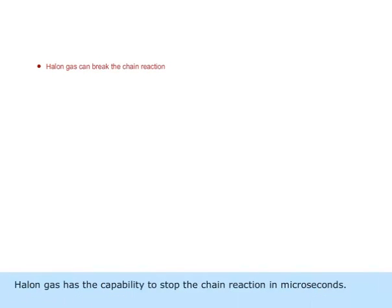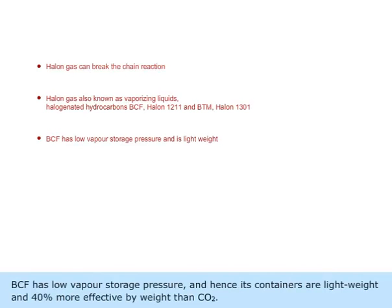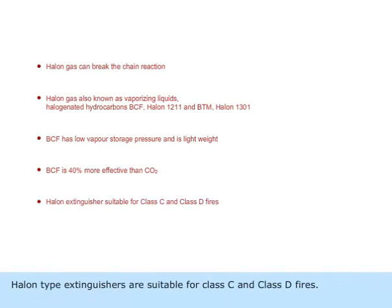Halon gas has the capability to stop the chain reaction in microseconds. These gases are also known as vaporizing liquids. Halogenated hydrocarbons BCF, halon-1211 and BTM, halon-1301. BCF has low vapor storage pressure and hence its containers are lightweight and 40% more effective by weight than carbon dioxide. Halon-type extinguishers are suitable for Class C and Class D fires.